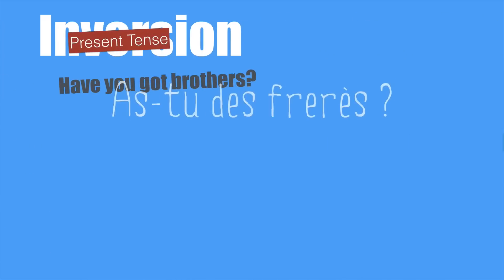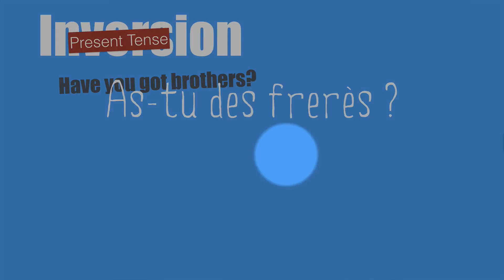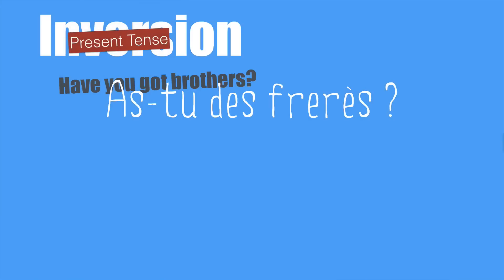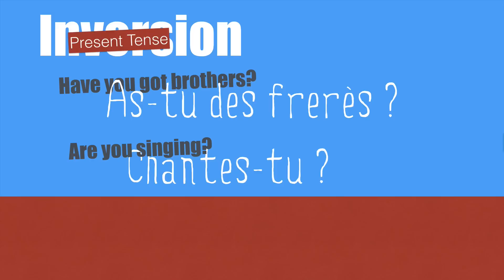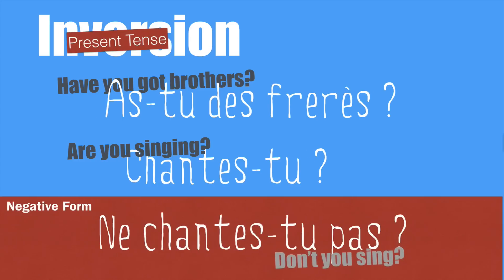Let's see more yes/no questions. 'Have you got brothers?' As you can see, the inversion is just between the verb and the subject; we don't touch the rest of the sentence. 'Are you singing?' — 'Chantes-tu?' And the negative form is, in this case, 'Ne chantes-tu pas?' — Don't you sing?